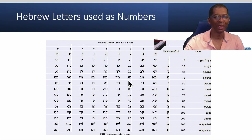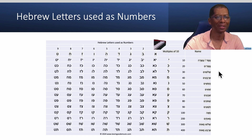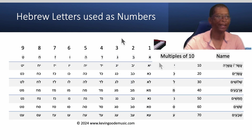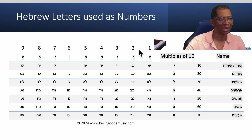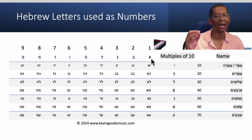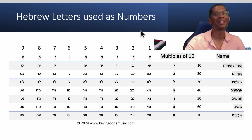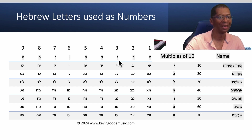Okay, so here we have it. This was the full chart, but we're going to break it down a little bit. Over here are the numbers that we learned already, one through nine, and we have their letter representation. So: Aleph, Bet, Gimel, Dalet, He, Vav, Zayn, Chet, and Tet.